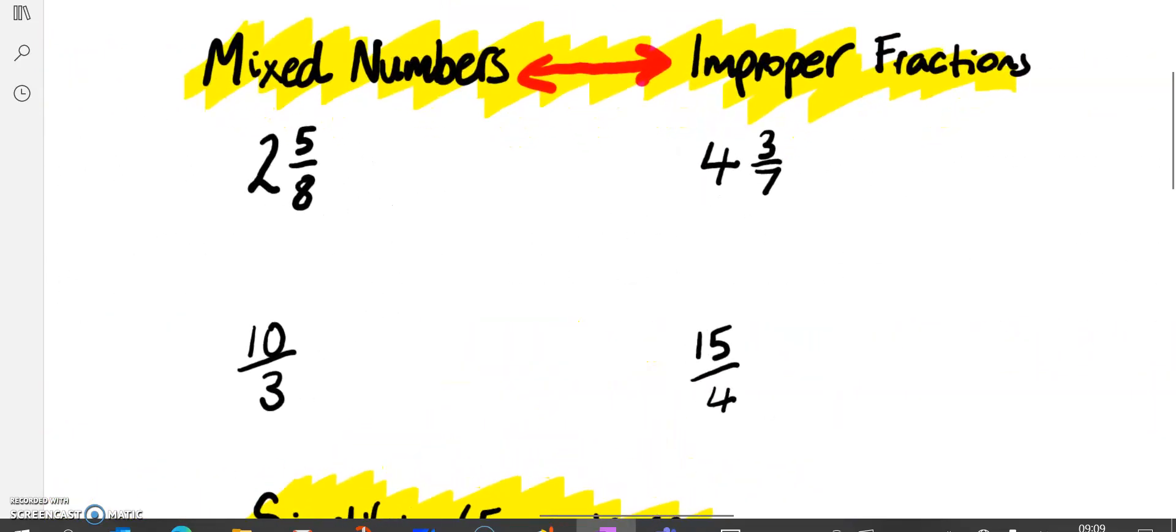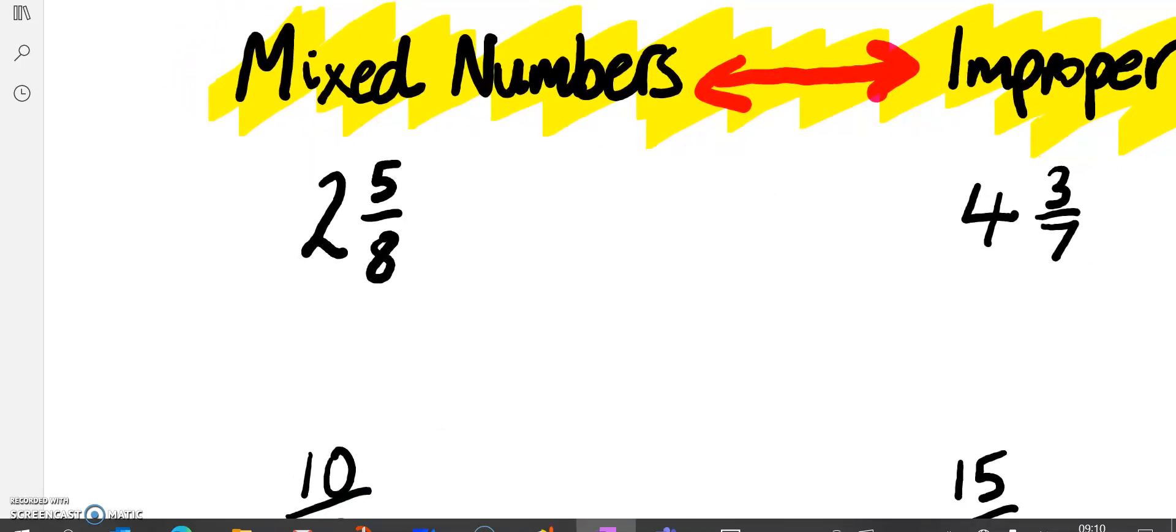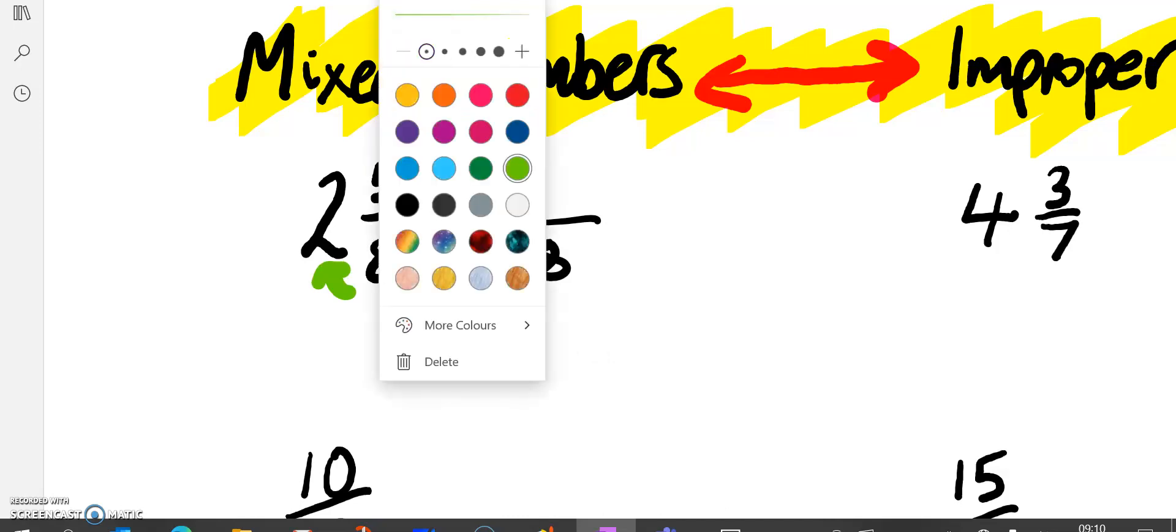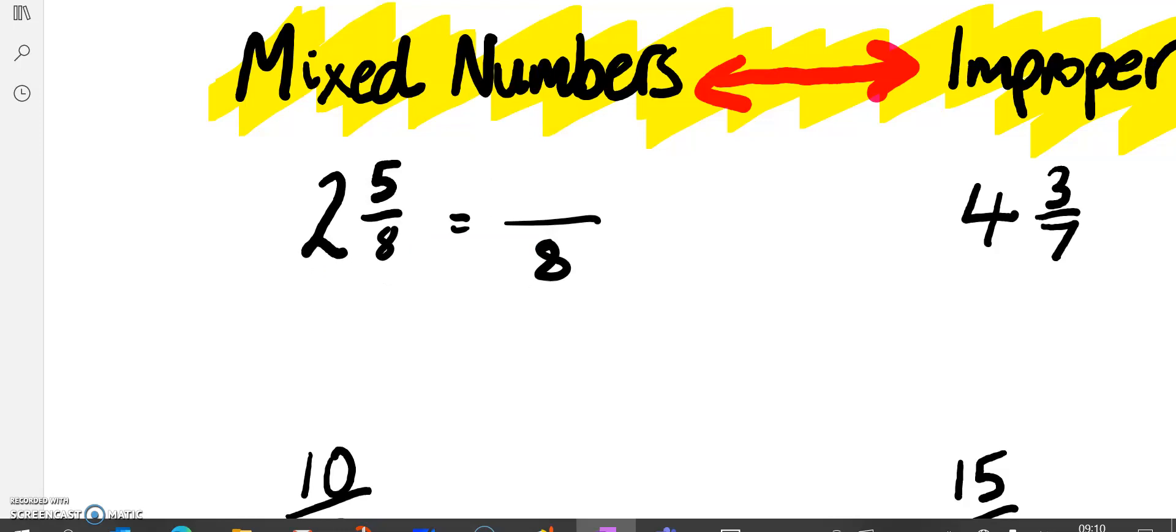We then looked at how to convert between mixed numbers and improper fractions. Mixed numbers will have a certain number of wholes and then a fraction of an amount. This first one here, we've got two wholes and 5 eighths. We want to convert this into an improper fraction. That's where the numerator is bigger than the denominator. What we're going to do is multiply 8 times 2 which is 16, and then we're going to add on the 5. 16 plus 5 is 21. So 2 and 5 eighths is the same as 21 eighths. These are exactly the same. The first one here is a mixed number, the second one an improper fraction.